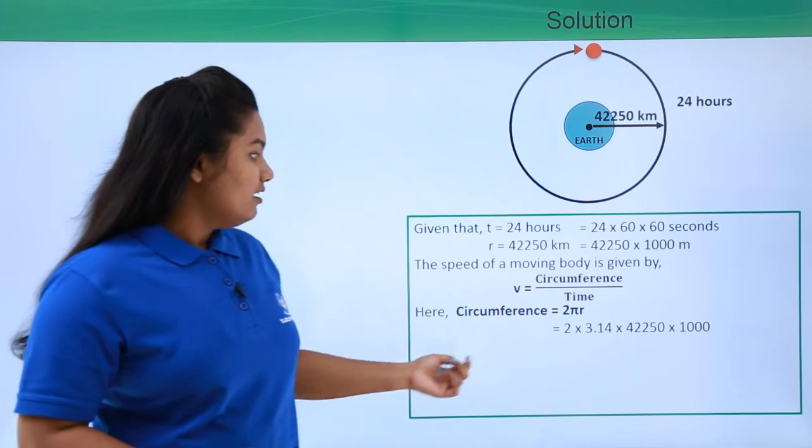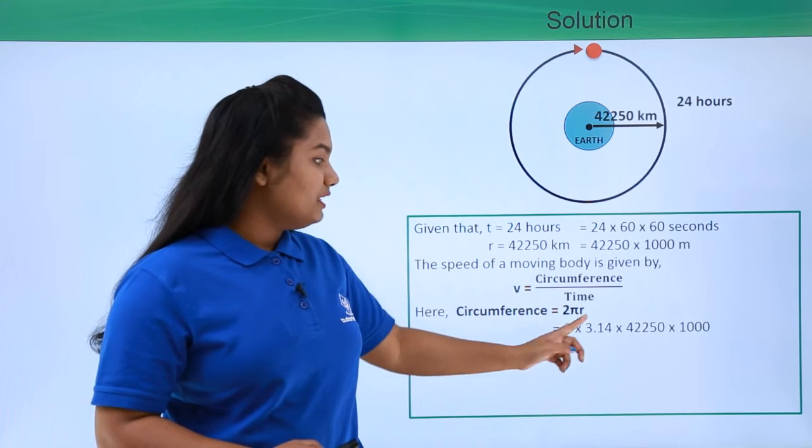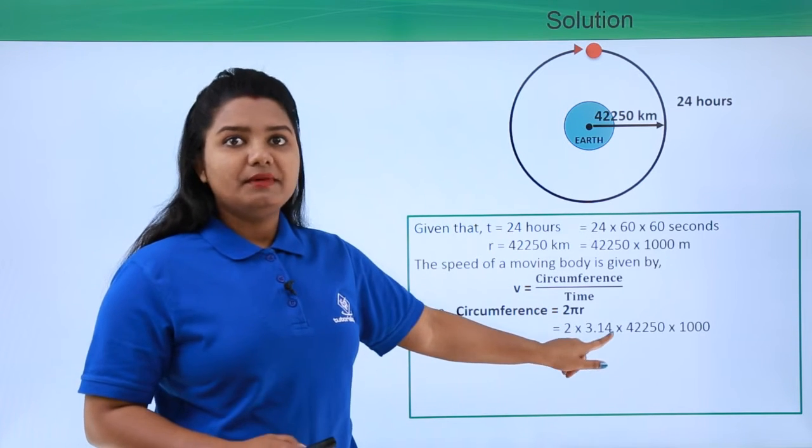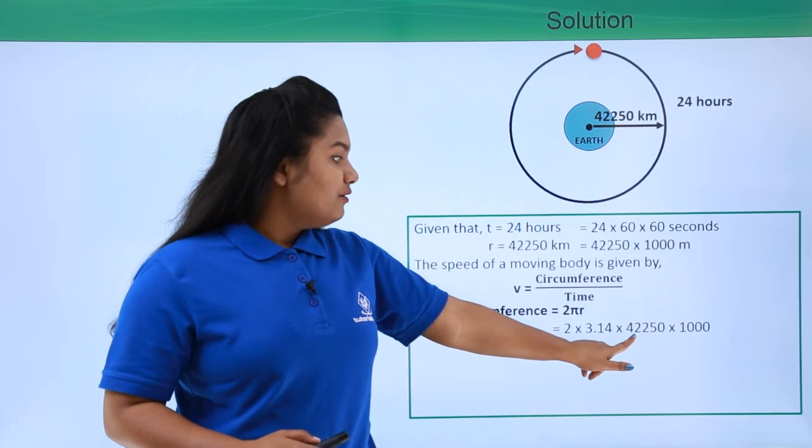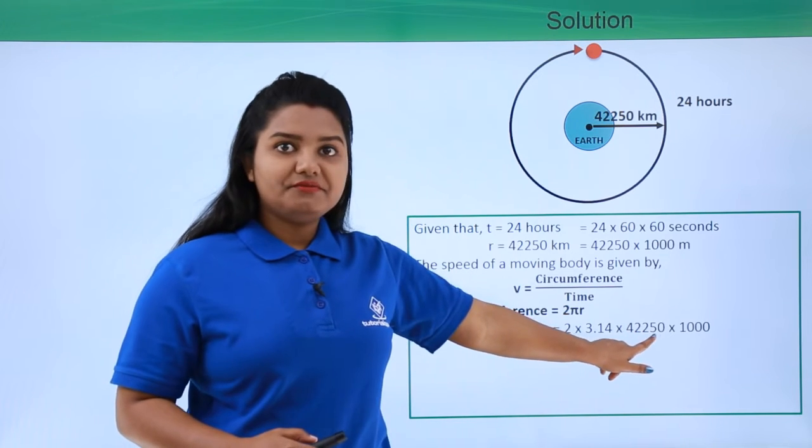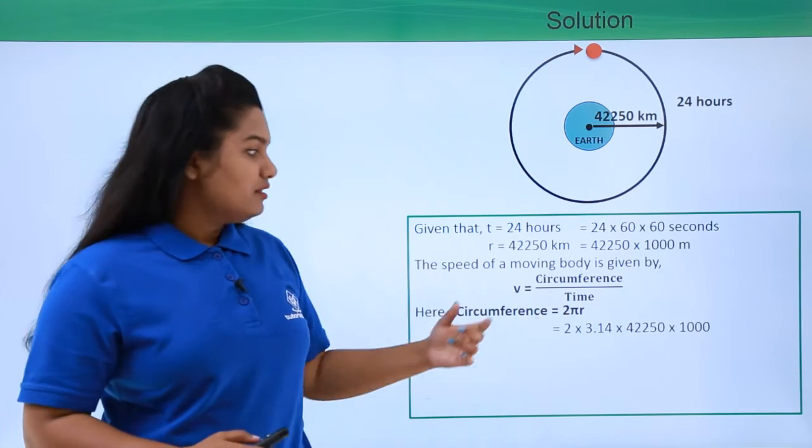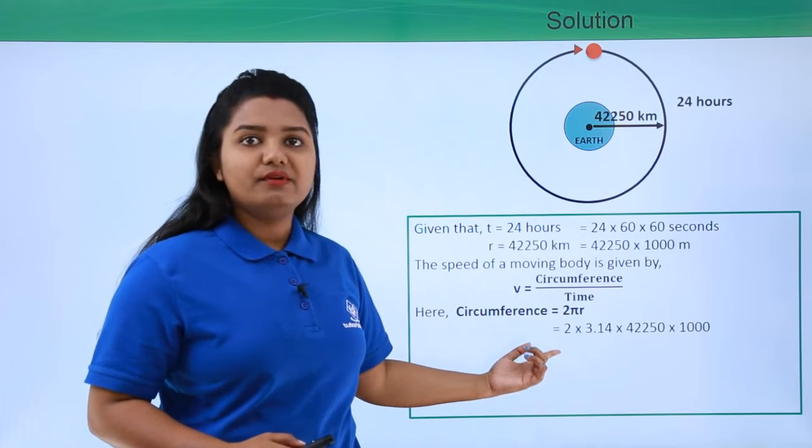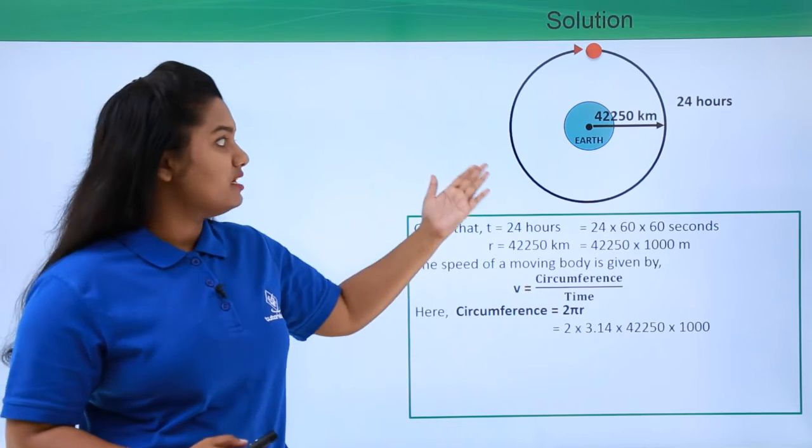Let's substitute the values and find the circumference of the circular path. The circumference will be 2 multiplied by 3.14 multiplied by the radius, which we have as 42,250 multiplied by 1,000. This whole thing is our circumference of the circular path.